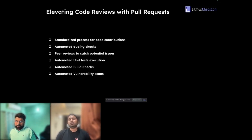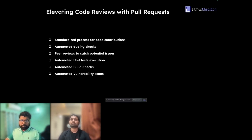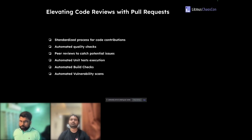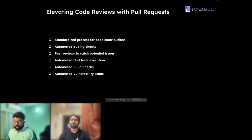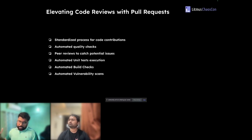So we're following good code quality checked by automated tools, we can review the feature properly, unit tests are in place — but what if the build fails? You wouldn't be able to deploy to your development, staging, or QA environment. You'd have to go back to whoever raised the PR, let them know the issue, they'd fix it and raise another PR — a long feedback loop. That's where automated build checks come in. In our case with Litmus Chaos, we're building Docker images and binaries, so we build them as part of the PR to ensure all builds pass before merging.